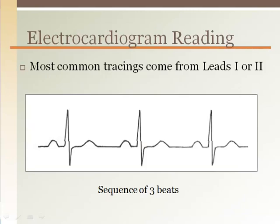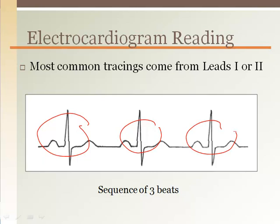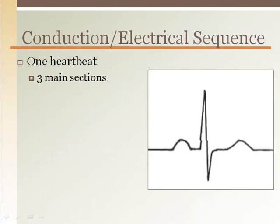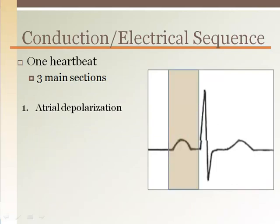The electrocardiograms that we have all seen before come from limb leads one or two. This is a tracing of a patient showing three consecutive heartbeats. Notice that each beat has a number of waveforms, each representing a specific electrical event in the heart during the electrical activation, or depolarization and repolarization process. In a single beat, the waveforms can be broken down into three main parts.